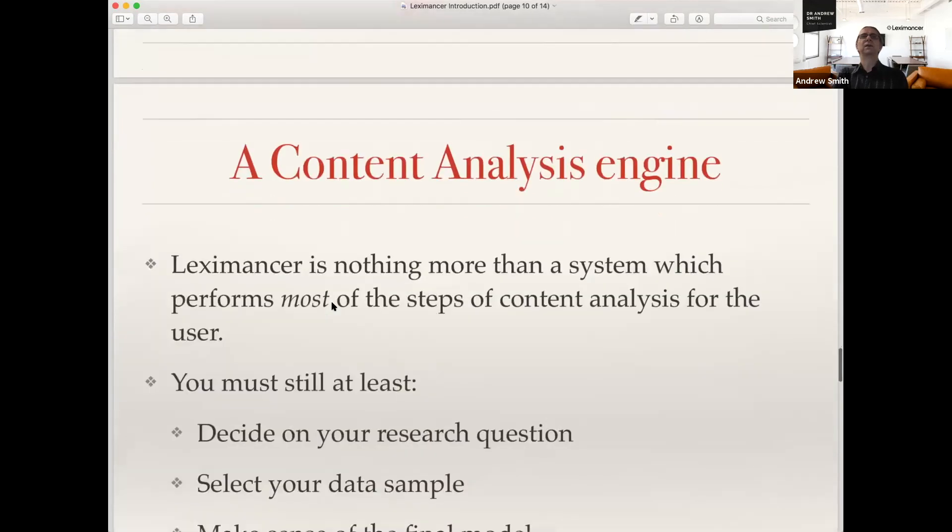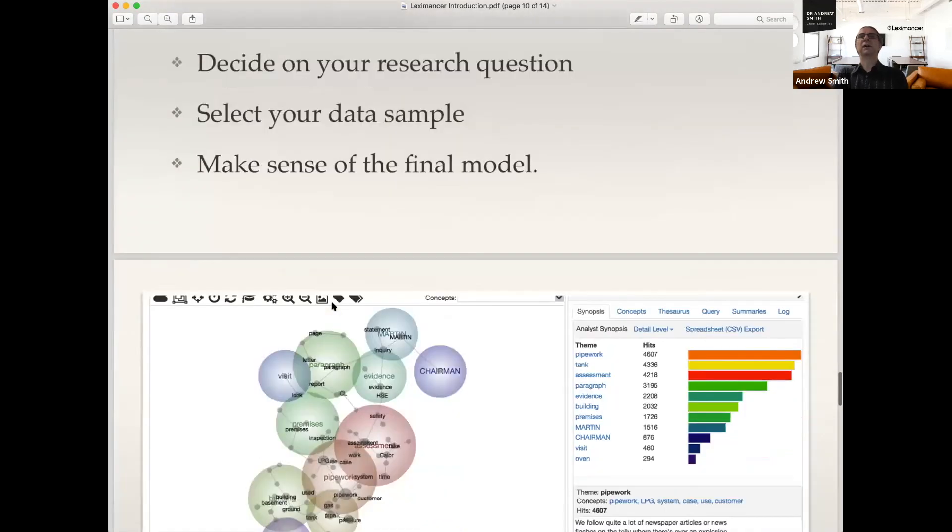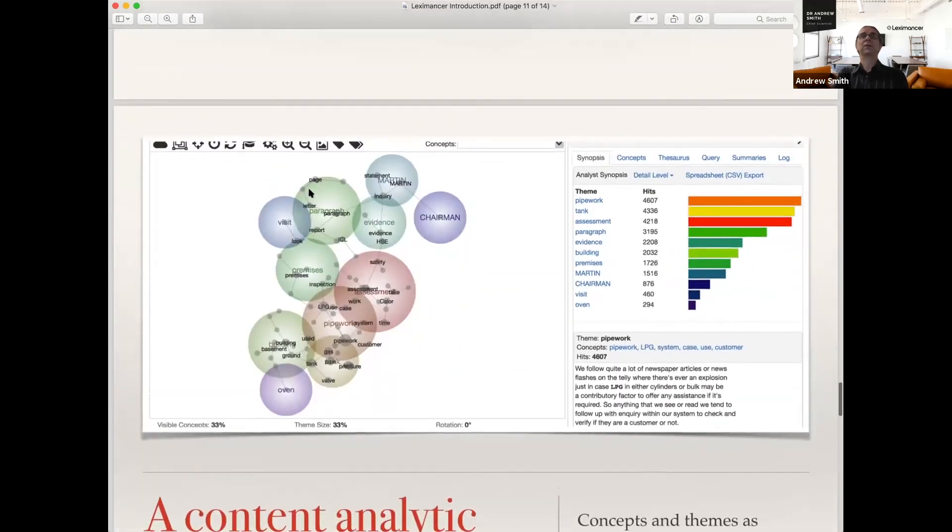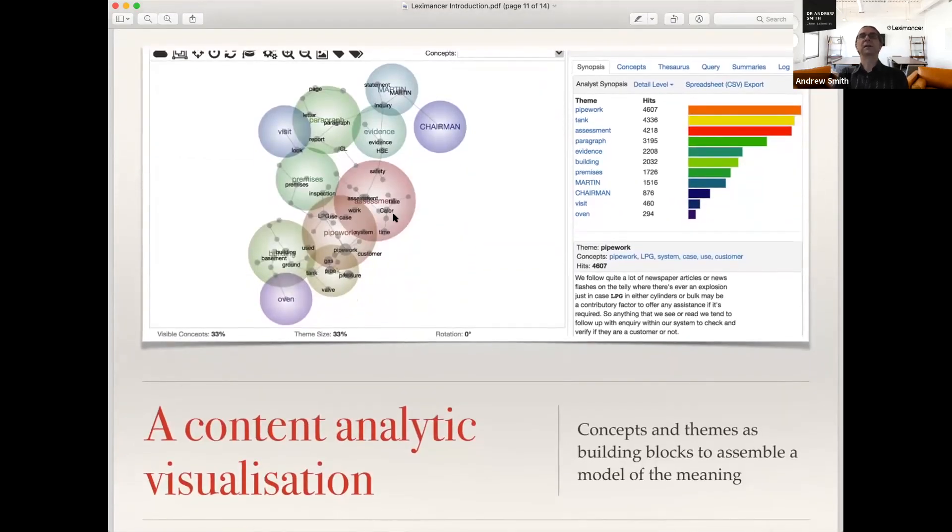If you've seen Leximancer before, you know that one of the models it produces is this thematic concept map of the data. But it's then up to you to do the sense making to interpret this model. It's meant to take you to the places in the text so you can get coverage without too much prior bias or preconception.